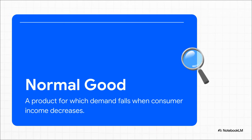But really, it's a simple idea. For most things we buy, like groceries or new clothes, when our income drops, we just buy less of them. That's a normal good.